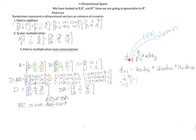To get the first row, first column of D, multiply the first row of A times the first column of B: 1 times 0, 0 times 1, 3 times 0. For the first row, second column, multiply the first row of A times the second column of B: 1 times 1, plus 0 times 0, plus 3 times 1. For the first row, third column, multiply the first row times the third column: 1 times 0, 0 times 0, and 3 times 1, then add them all together.